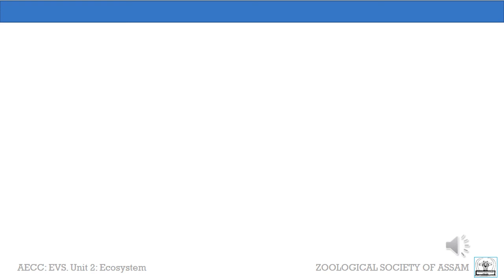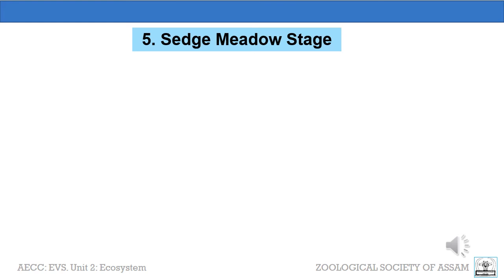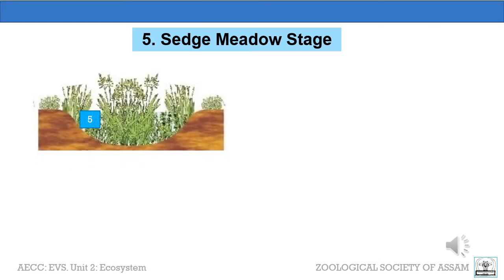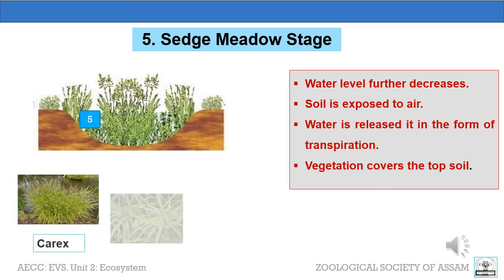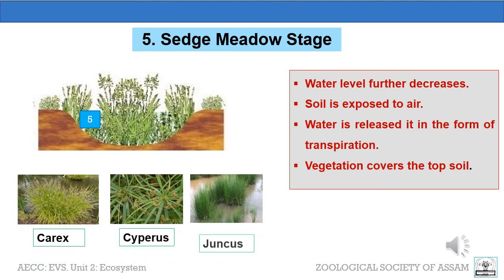The fifth stage is the sedge meadow stage, when the pond becomes marshy. Water level decreases further, and the plant species that can live in marshy conditions grow. These species absorb water from the pond and release it in the form of transpiration. The pond dries up, leaving the soil exposed to air. The chief plant species at this stage are Carex, Cyperus, Juncus, etc.